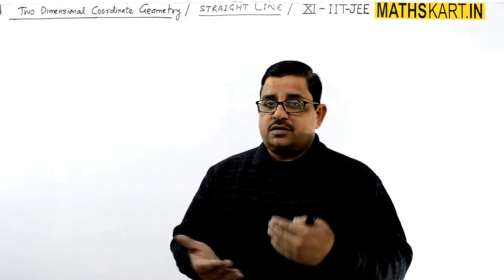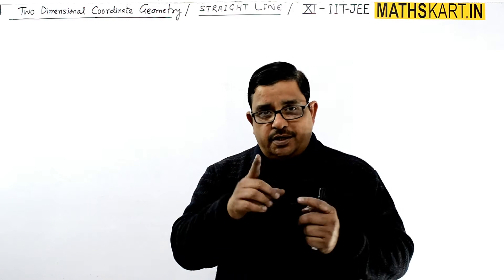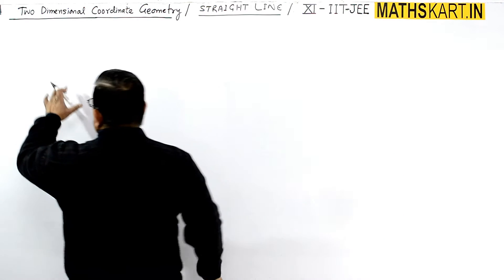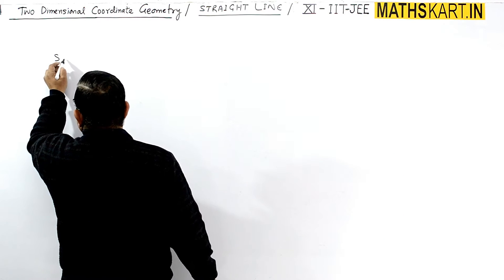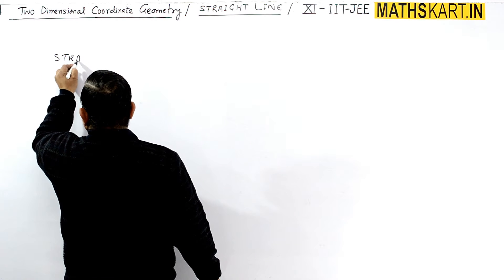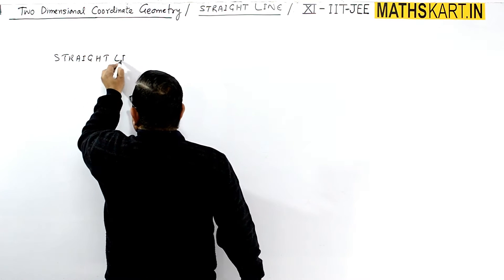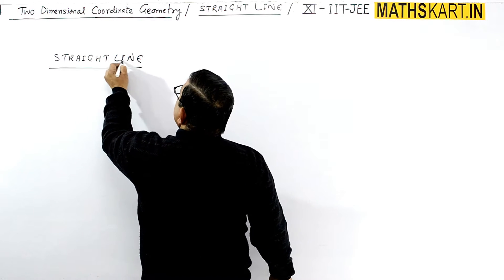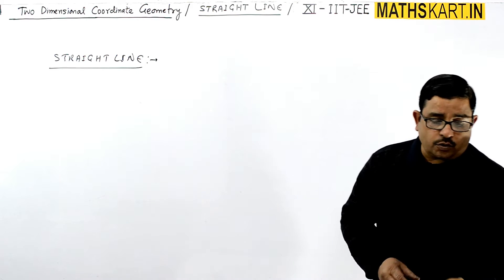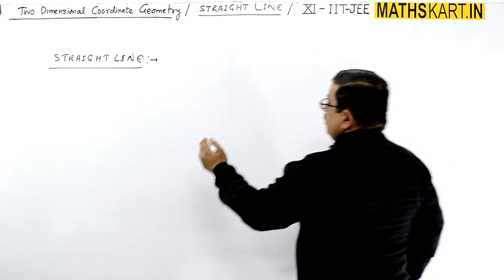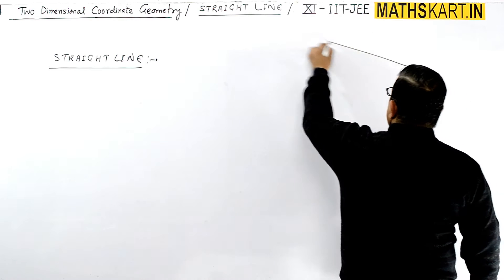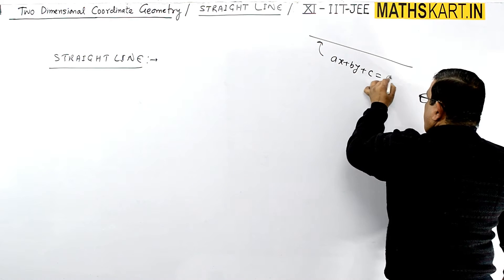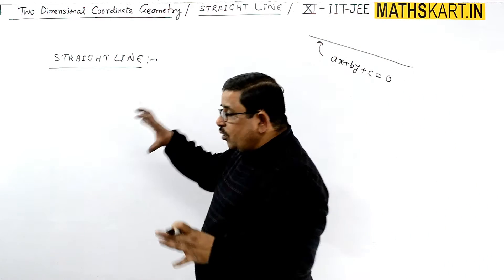Our next chapter in two-dimensional coordinate geometry is the straight line. The definition: a straight line is also a locus. The general equation is ax + by + c = 0.